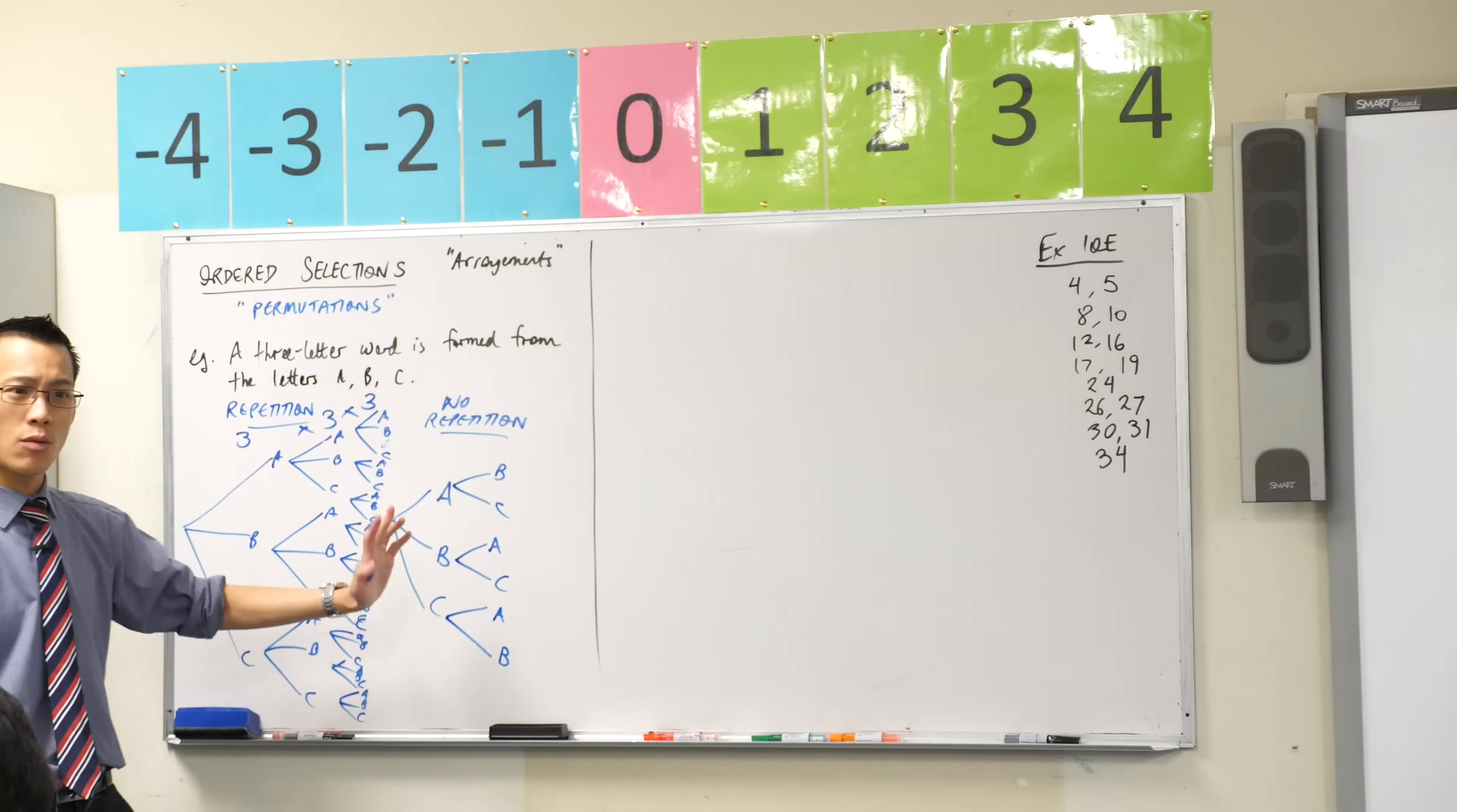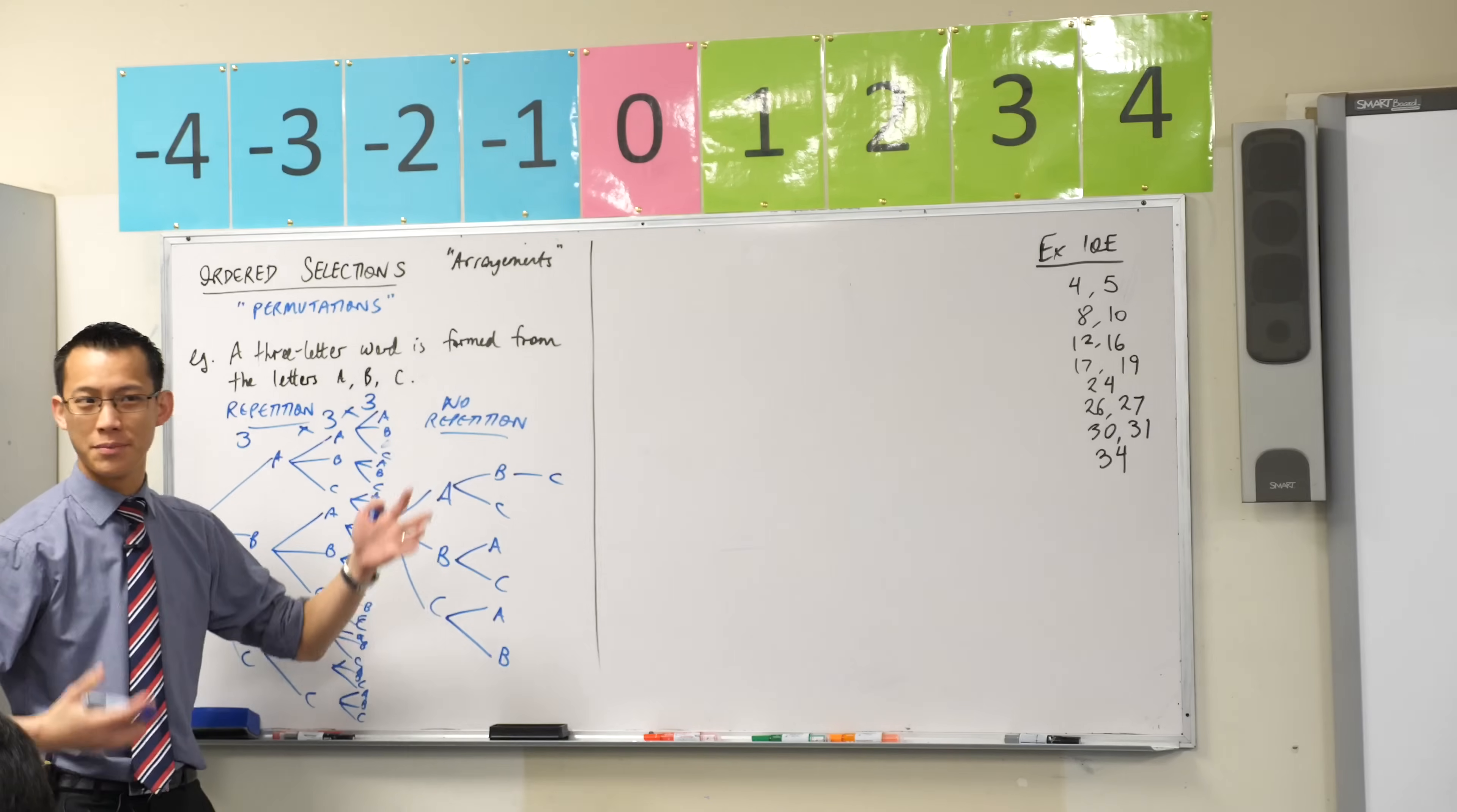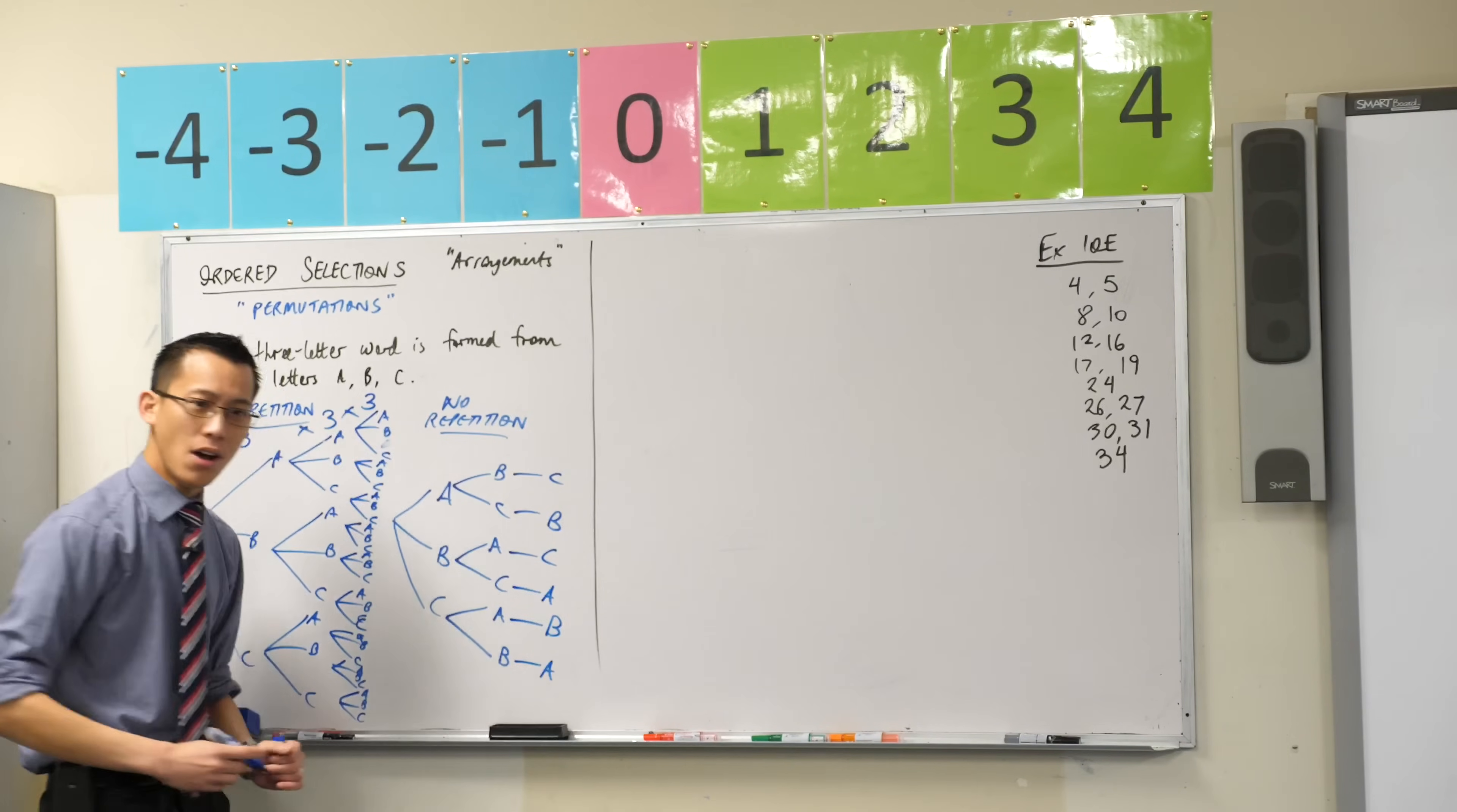I've selected two letters. How long did I want my word to be? Three letters, so I've got one more to go. But here, after you've chosen A and B, how many choices are left? Well, there's just one. There's only one letter to choose from, so it's a bit of a funny-looking tree diagram. You've only got one option left. Same deal with each of the others. You've only got one choice each time. You just have to look carefully and make sure you get the right one.